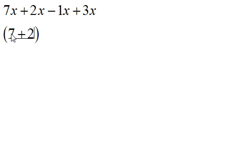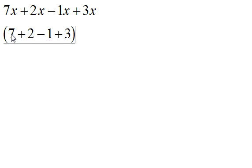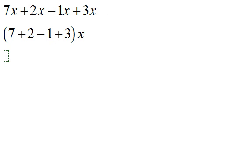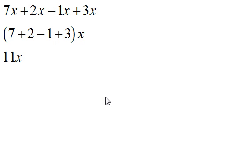So: 7, add the 2, subtract the 1, add 3. And then whatever answer I get, my answer is going to have the letter x because all of them have the variable x. Now let's work it out: 7 plus 2 is 9, 9 minus 1 is 8, and 8 plus 3 is 11.